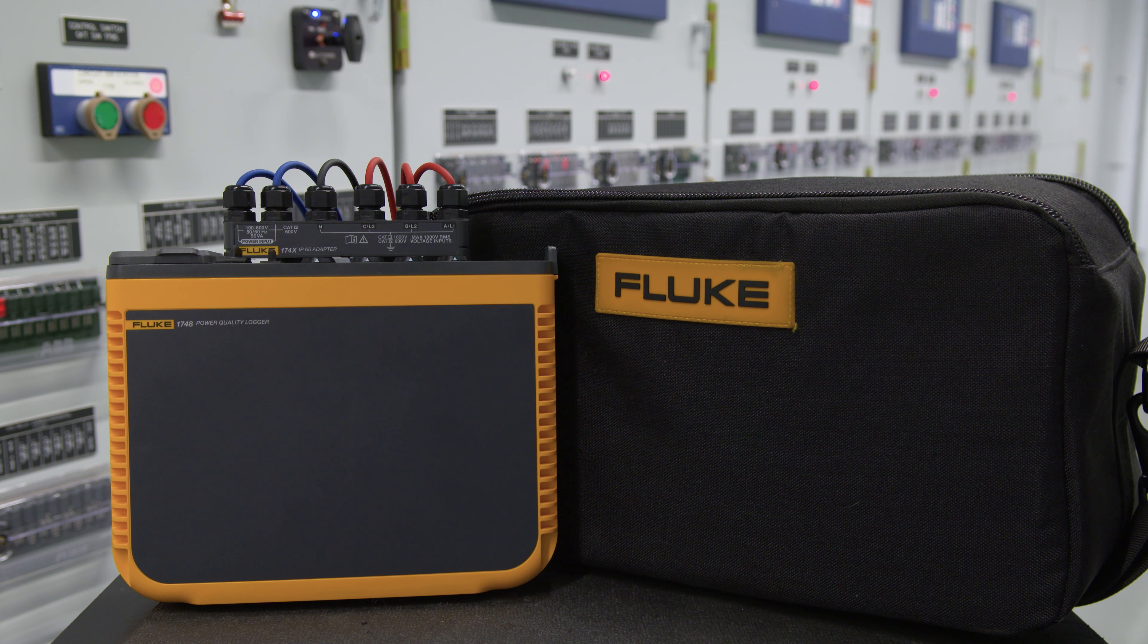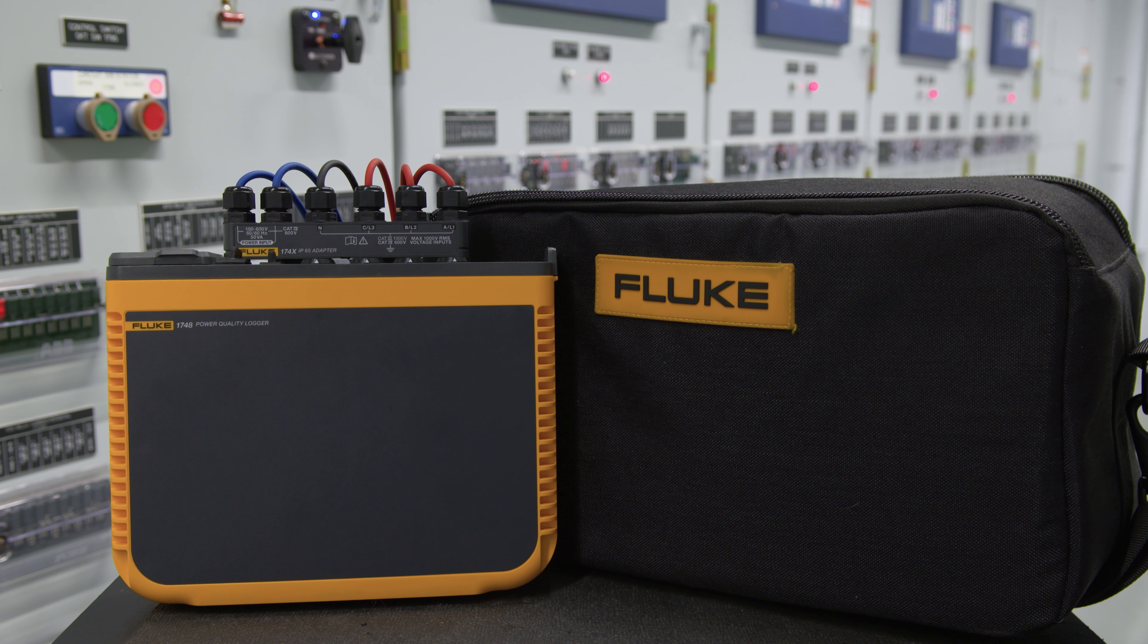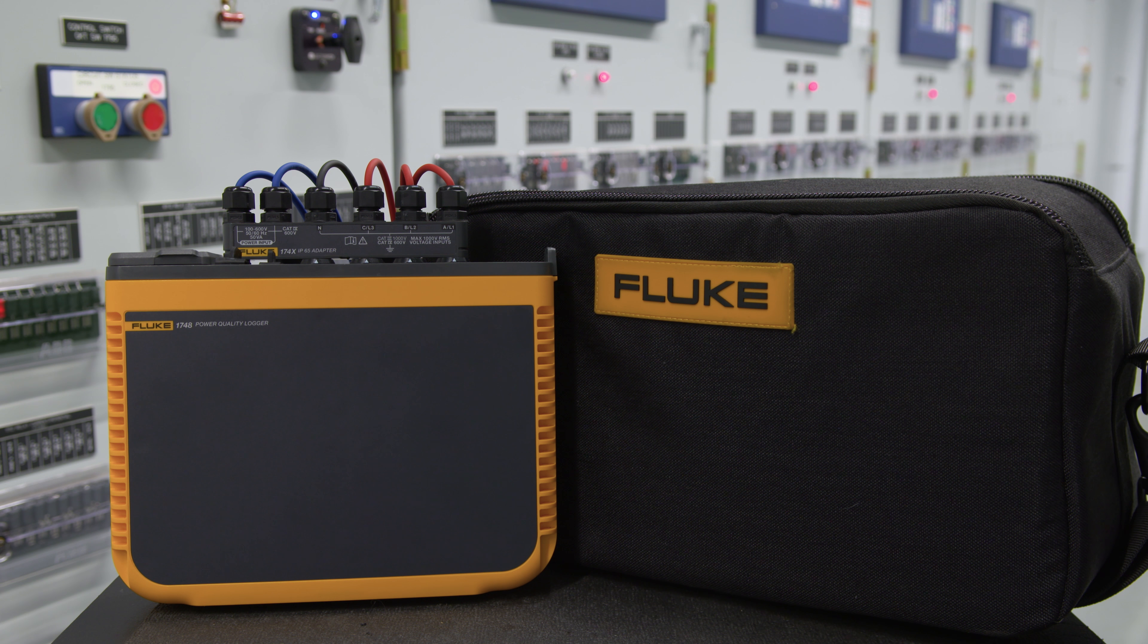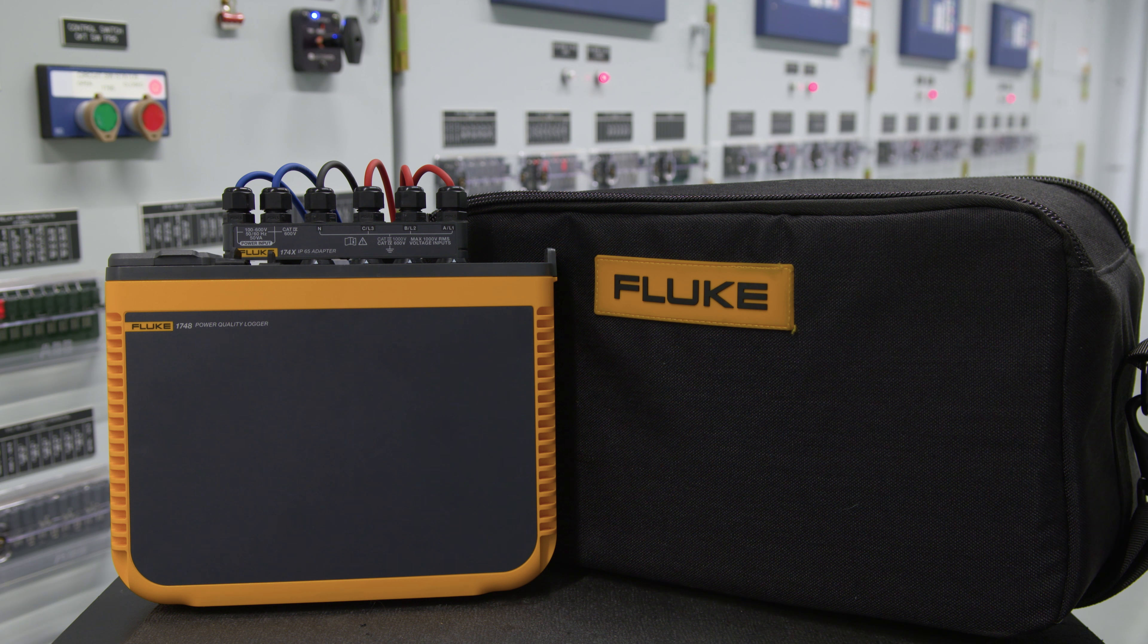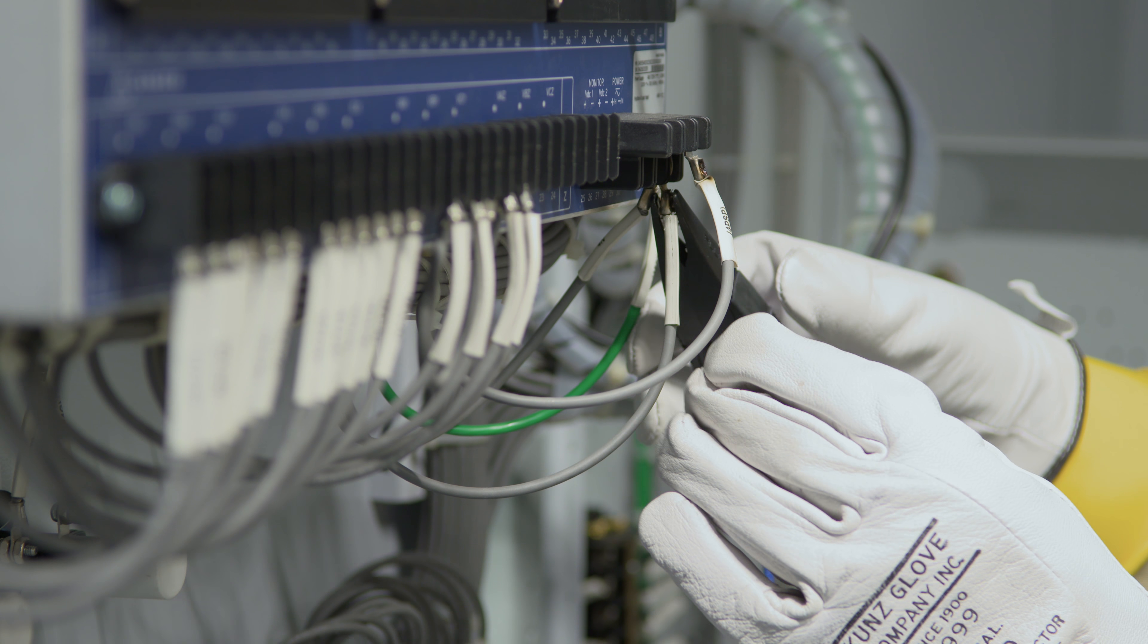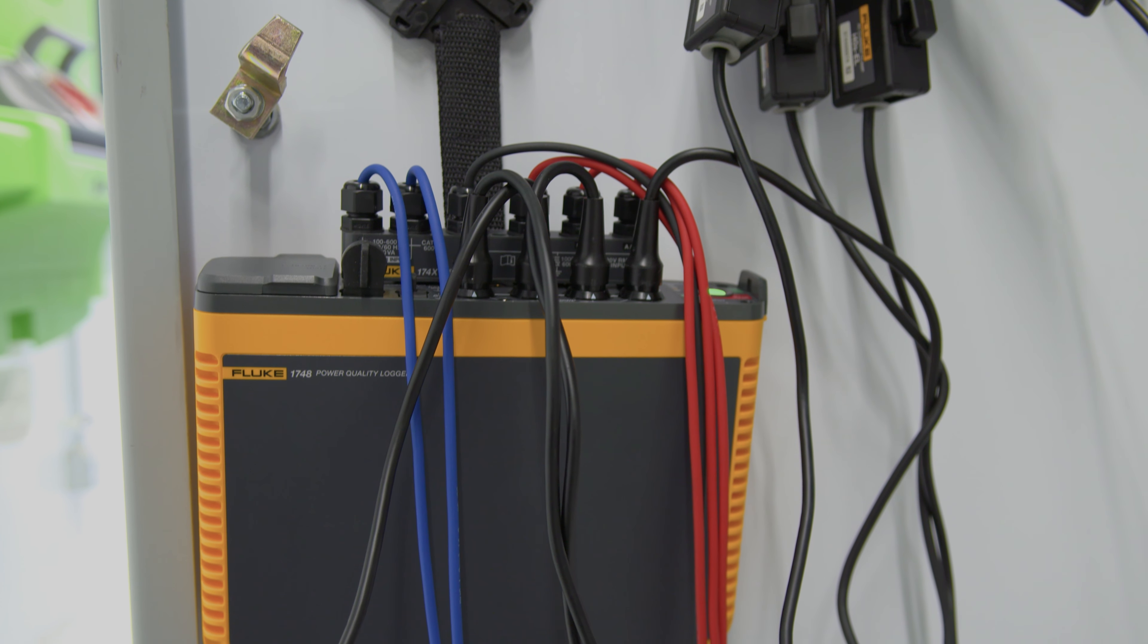With its small footprint, the 1740 series is designed to fit into tight spaces and panels. It can even be powered directly from the measured line, which is critical for installations where there is no power outlet available.